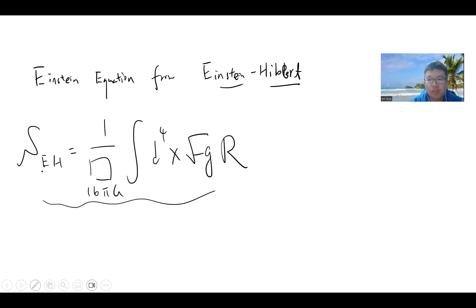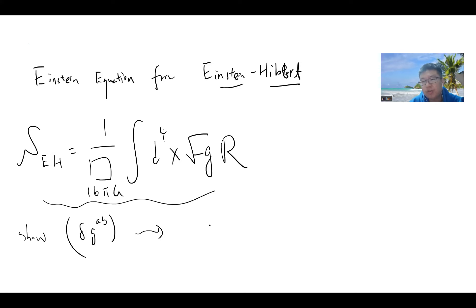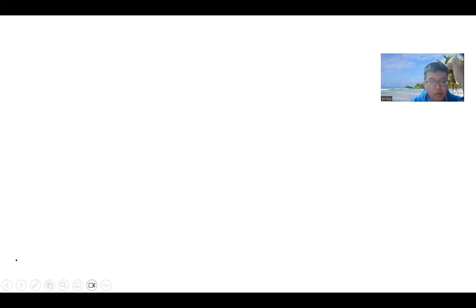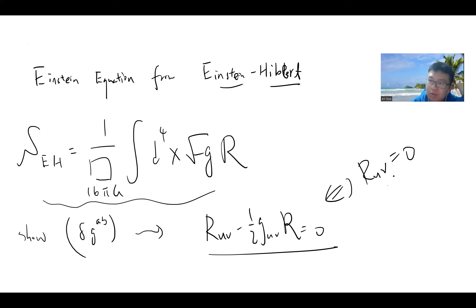Our goal is to show that if you do the variation on g, you will get the Einstein field equation in vacuum — basically the empty Einstein-Hilbert equation in vacuum. And one can easily prove that this is true if and only if the Ricci tensor is zero.